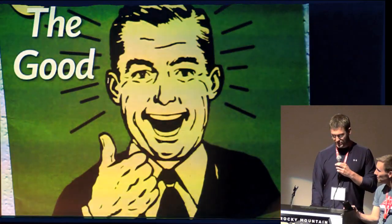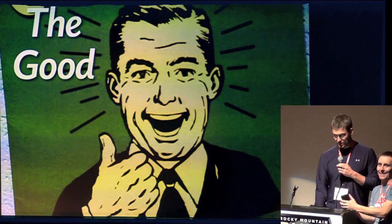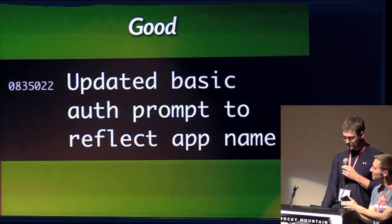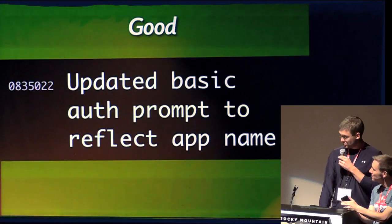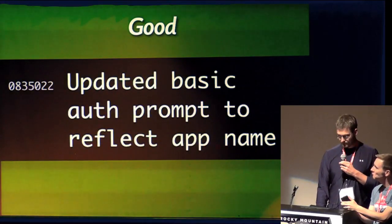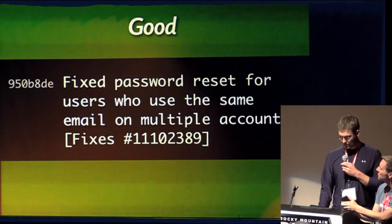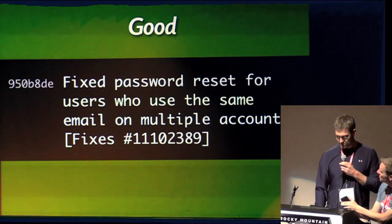So let's look at some better examples. I'm running out of time, so I'll go through these pretty quickly. I'm not claiming they're perfect, but they're out there. Here are a couple of short messages — we know what changed without looking too far into the diff. Here we know that we fixed a bug, and we know what the underlying problem was.